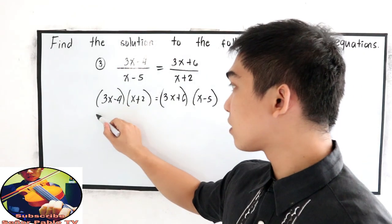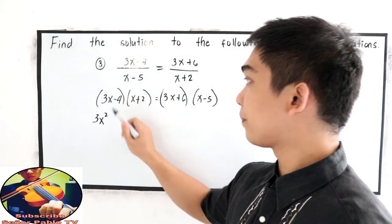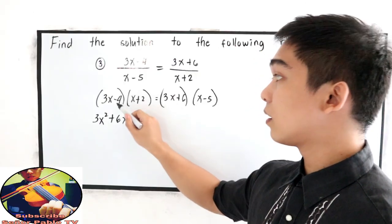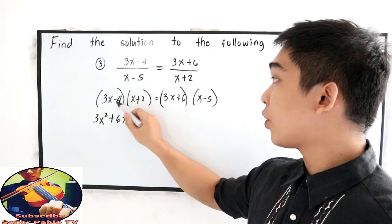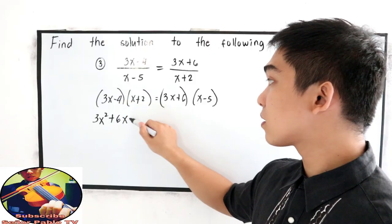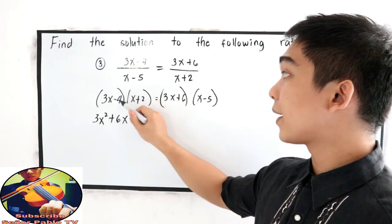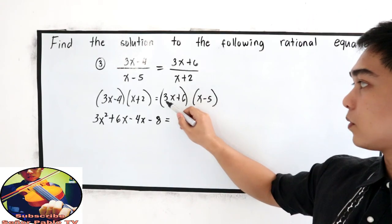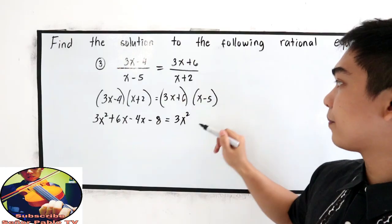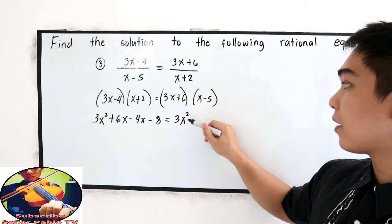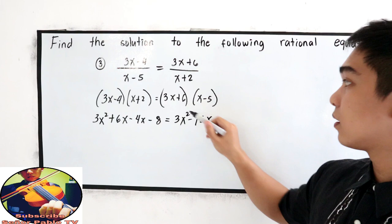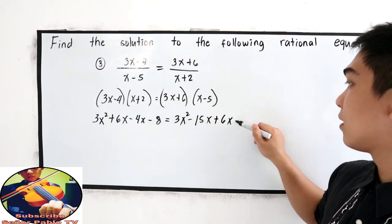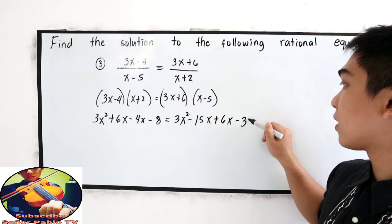So 3x times x, 3x squared. 3x times 2, plus 6x. Next, negative 4 times x, negative 4x, negative 4 times 2, negative 8. This is equal to 3x times x, 3x squared. 3x times negative 5, negative 15x. 6 times x, positive 6x. Then 6 times negative 5, negative 30.